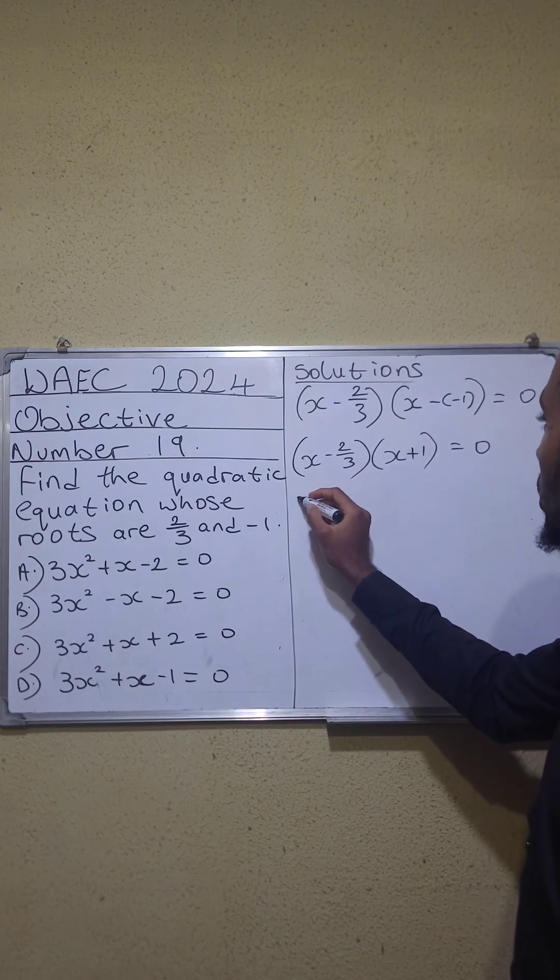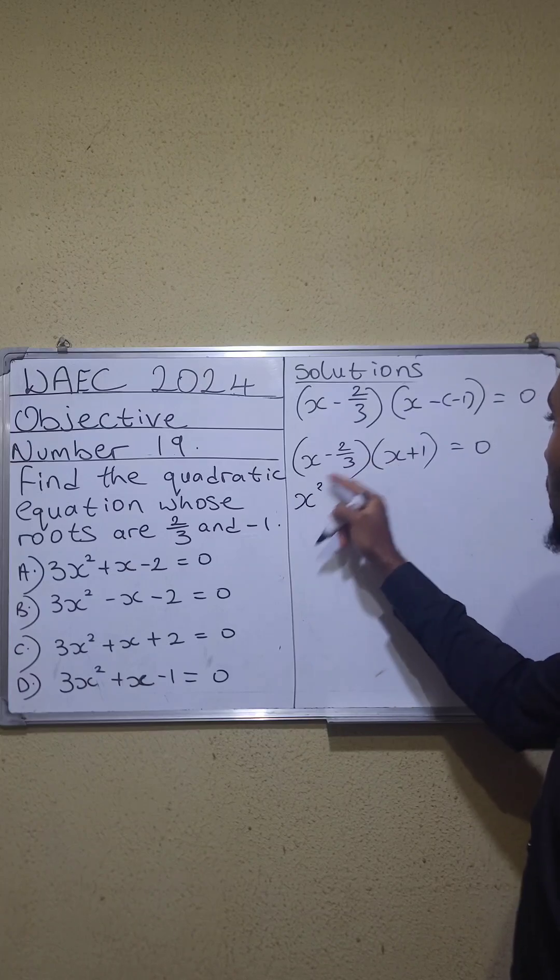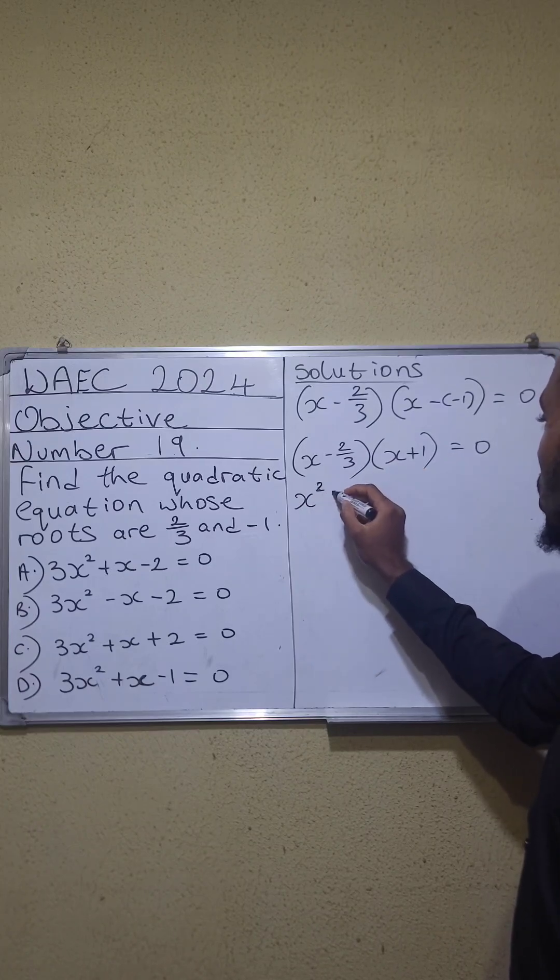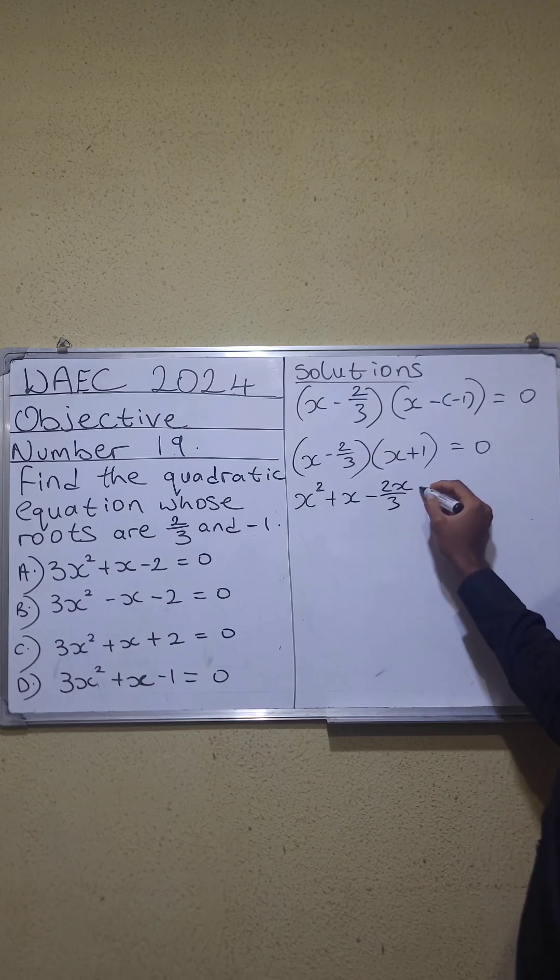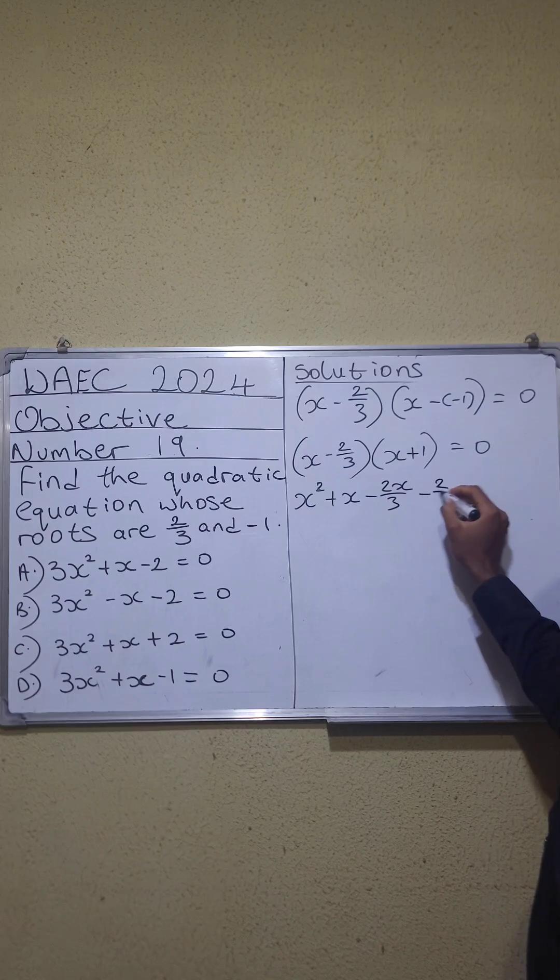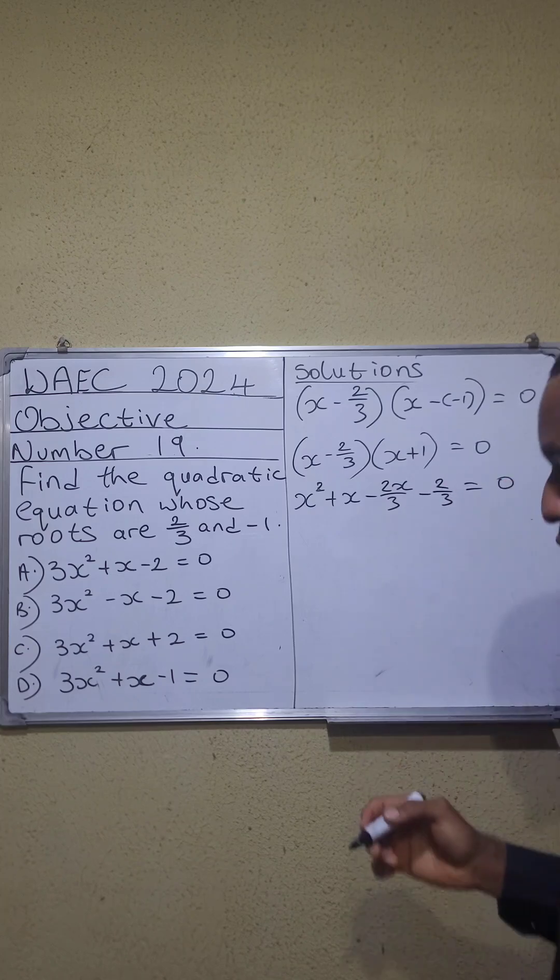You open the brackets. x times x gives you x squared. x times plus 1 gives you plus x minus 2 over 3 times x. You get minus 2x all over 3. And then minus 2 over 3 equals 0.